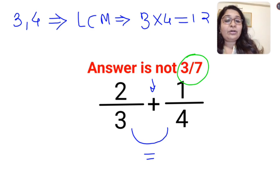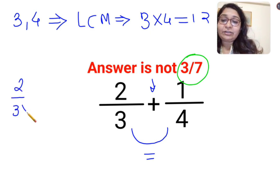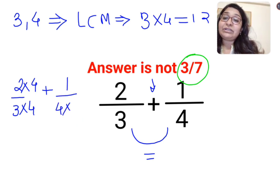So next, we need to convert this 3 into 12. So you multiply 3 by 4, and similarly you will do the same operation in the numerator. Similarly, we have 1/4. I want to convert this 4 into 12, so 4 gets multiplied by 3. Here also, this gets multiplied by 3.